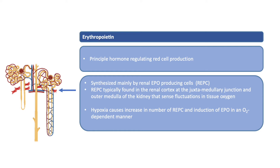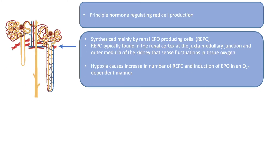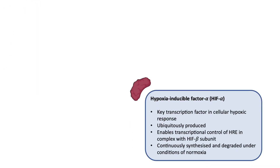The renal erythropoietin-producing cells are sensitive to oxygen fluctuations in the relatively hypoxic environment of the kidney. Hypoxia causes an increase in the number of erythropoietin-producing cells and the induction of erythropoietin in an oxygen-dependent manner. Erythropoietin transcription is regulated by the transcription factor hypoxia-inducible factor alpha, or HIF-alpha, which forms a subunit of the HIF complex and is the key transcriptional factor in cellular hypoxic response.